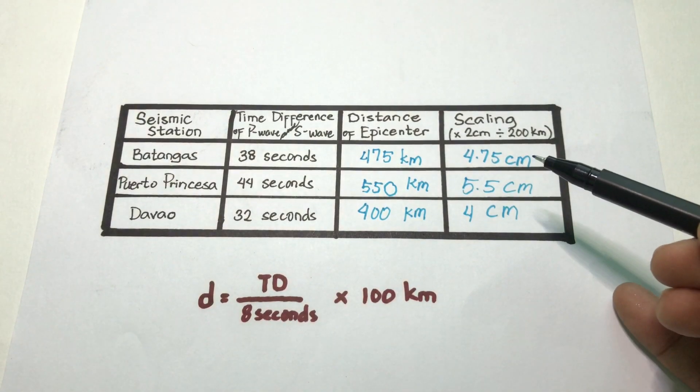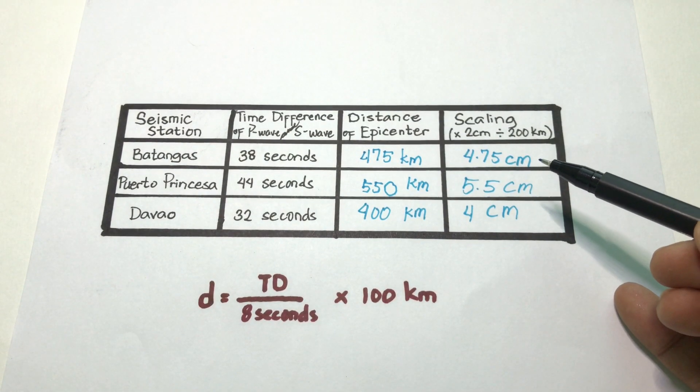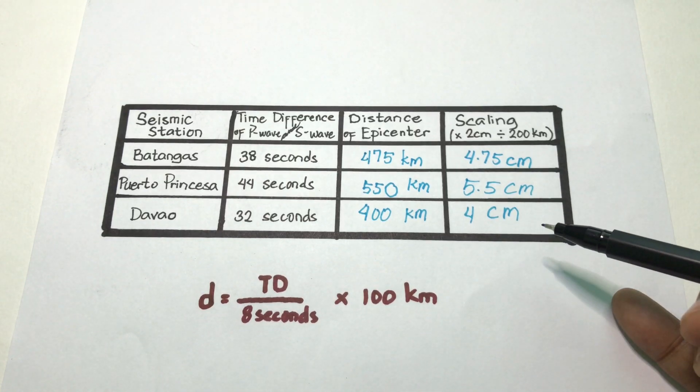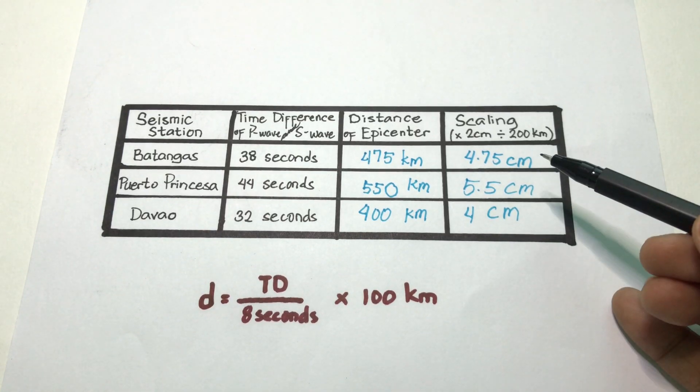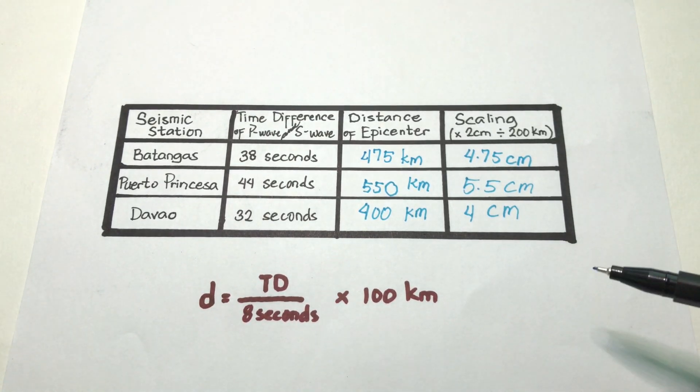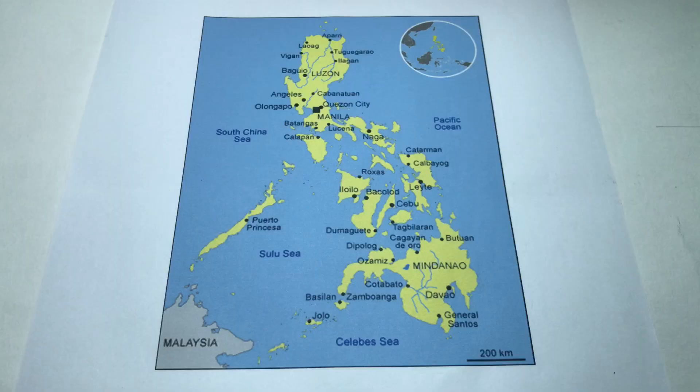Now we will draw three circles on our map, and the distances that we have solved will be used as the radius.